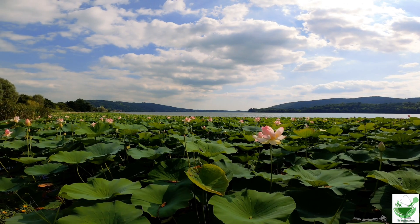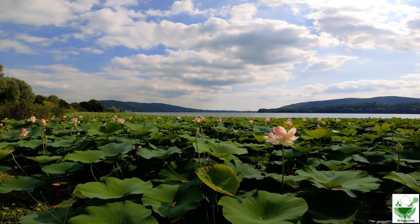Let's start from question number 101. How many grams of water are needed to make 150 grams of 4% weight per weight solution of potassium acetate? So the question is: we have to make a 150-gram solution where it has to be a 4% weight by weight solution of potassium acetate, and we have to find out the water in grams.